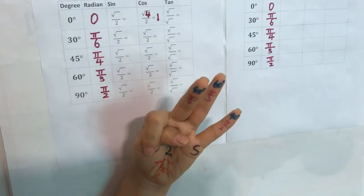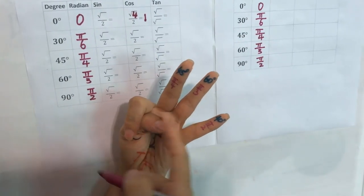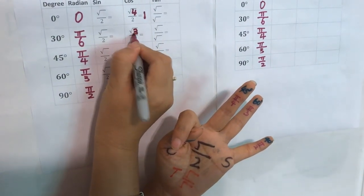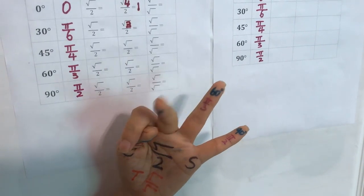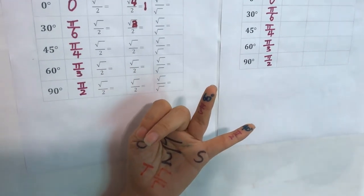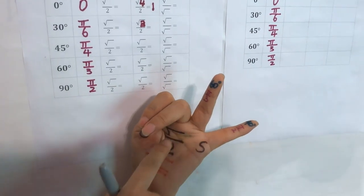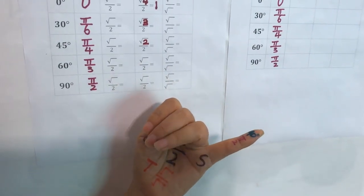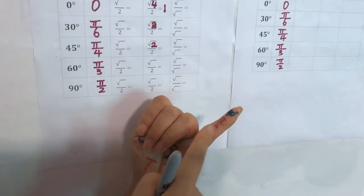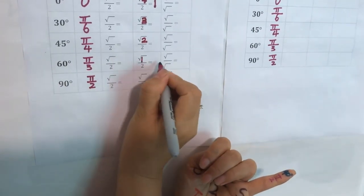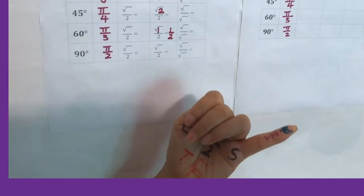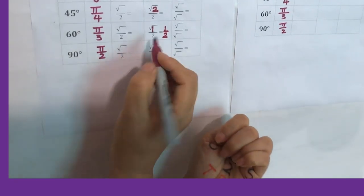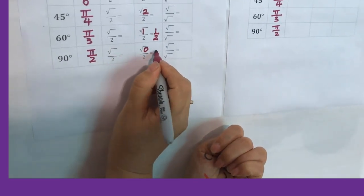Cosine 30: you have 3 fingers, so square root of 3 over 2. Cosine 45 equals square root of 2 over 2. Cosine 60 equals square root of 1 over 2, which means 1 over 2. Cosine 90 has no fingers remaining, so square root of 0 over 2 equals 0.